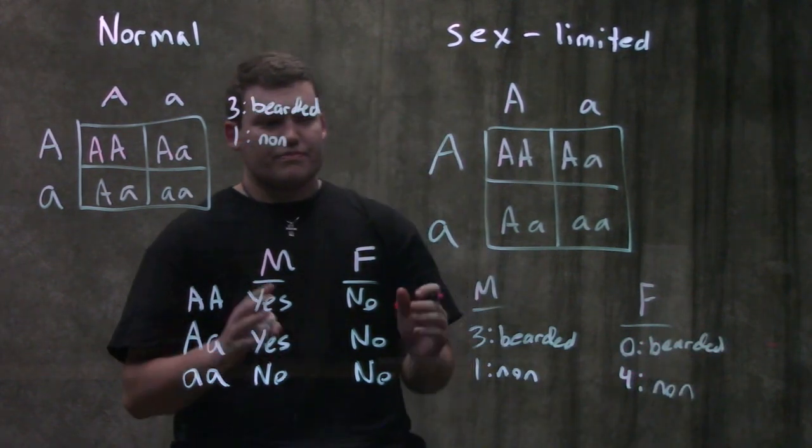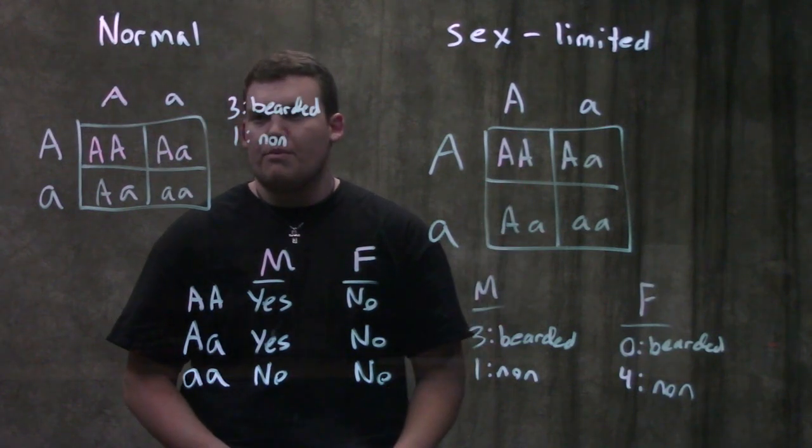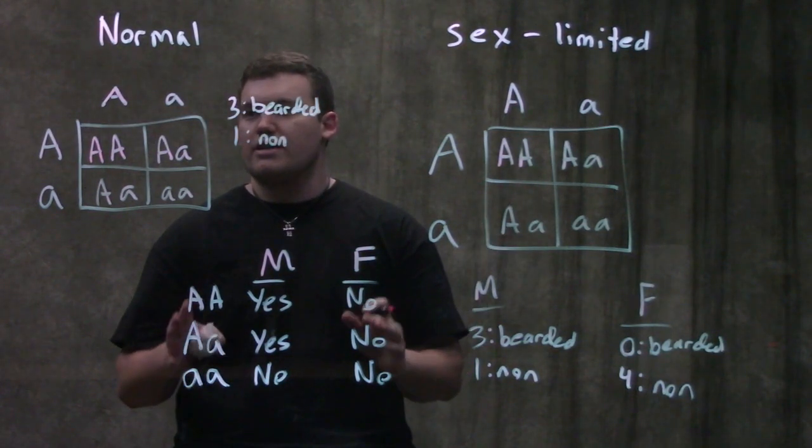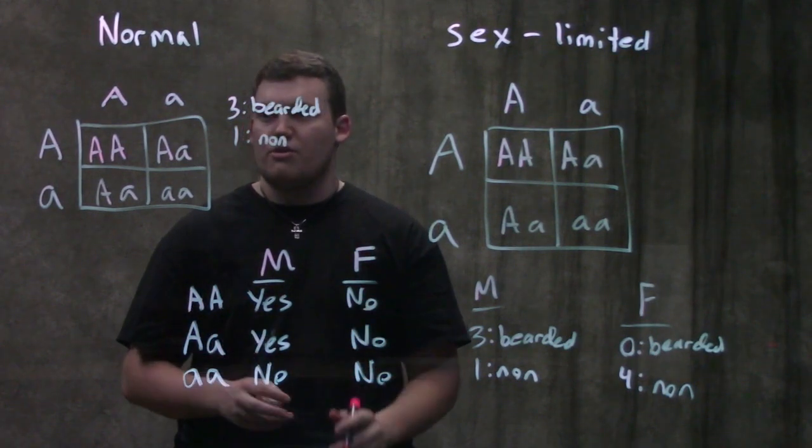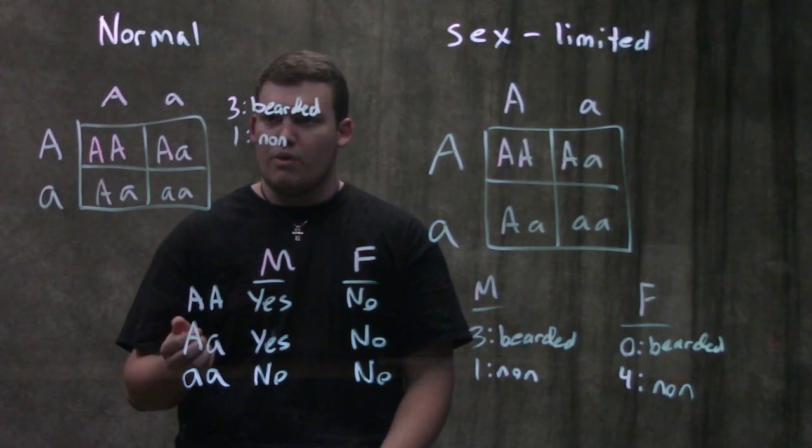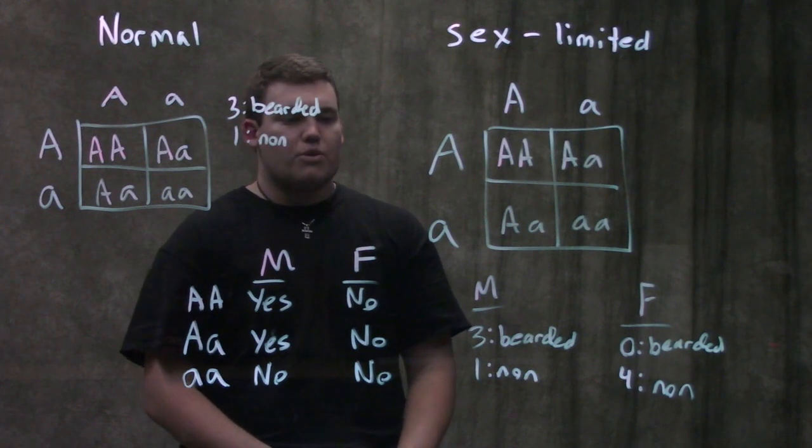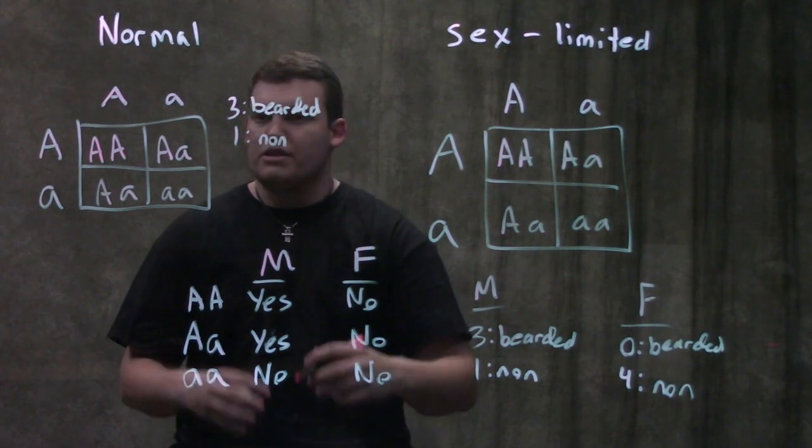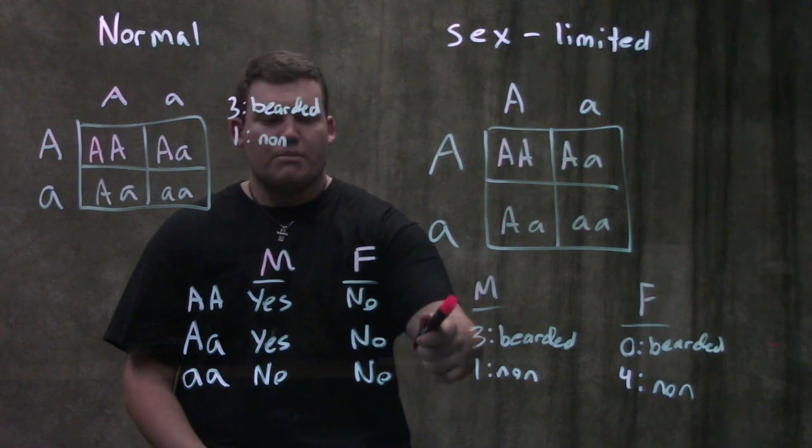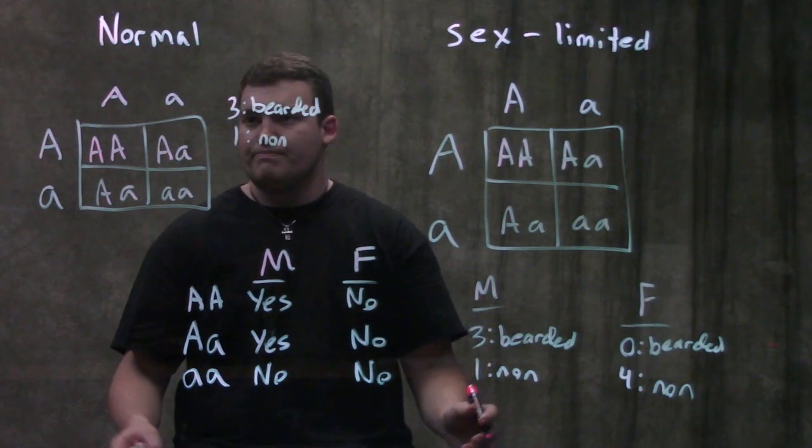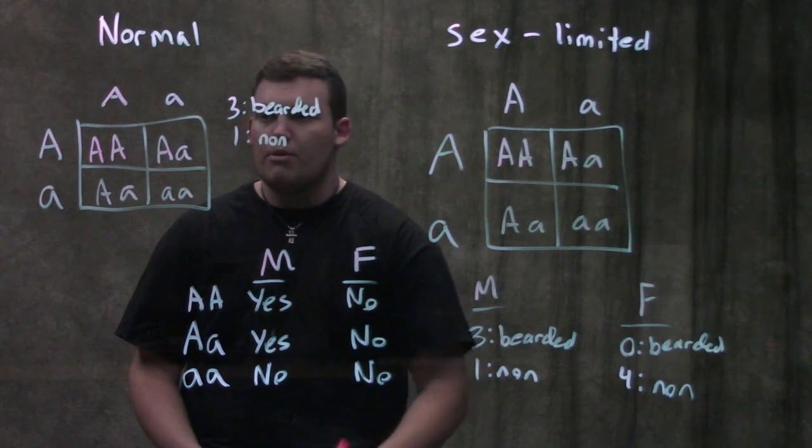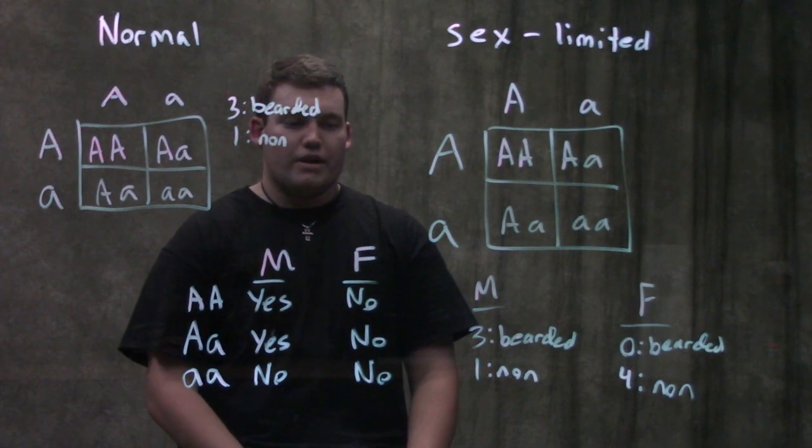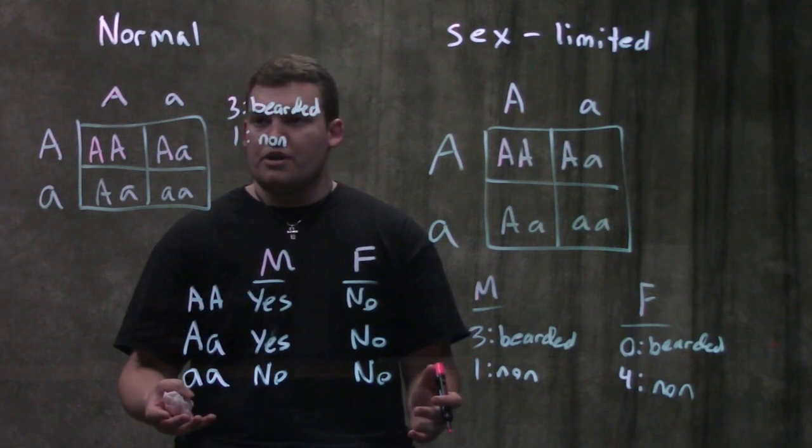So you guys can see we drew our Punnett square the exact same way. We didn't worry about anything about sex chromosomes or anything like that because, again, sex-limited traits are on autosomes. They are not on your X and Y or your sex chromosomes. So what we're going to see is the males, if it's a trait that's limited to males, it's going to be inherited completely normally. It doesn't always have the trait, right? If it's a dominant allele and it's a homozygous recessive animal or whatever, then it's still not going to show the trait.